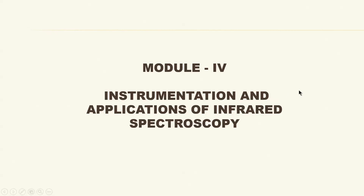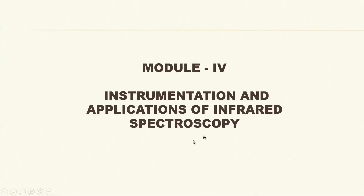Having understood that, let us move on to infrared spectroscopy, as I feel you now have most of the requisite background. Infrared spectroscopy is only part of the electromagnetic spectrum — it comes after the visible region. Before that there is ultraviolet, vacuum ultraviolet, X-rays, gamma rays, and cosmic rays. We are now entering Module 4: Instrumentation and Applications of Infrared Spectroscopy.